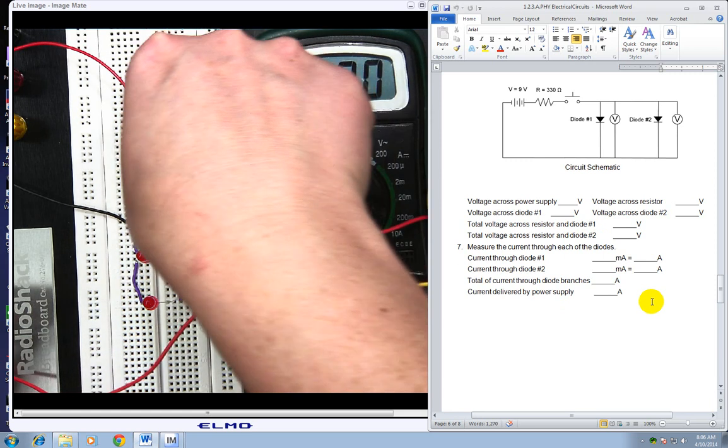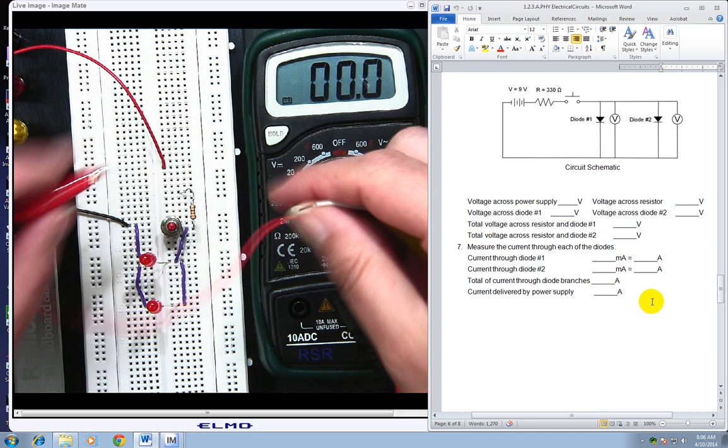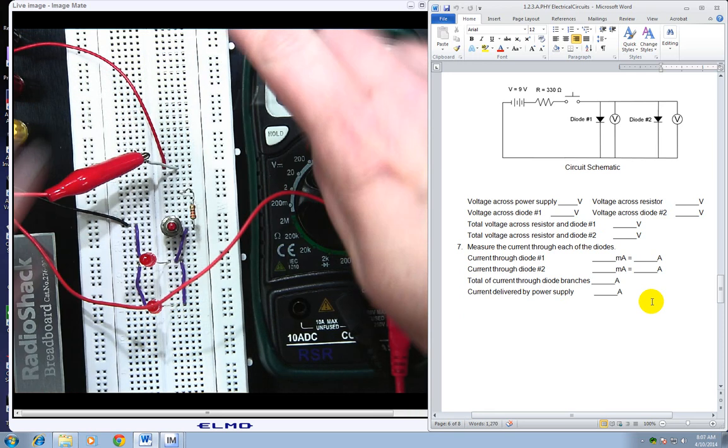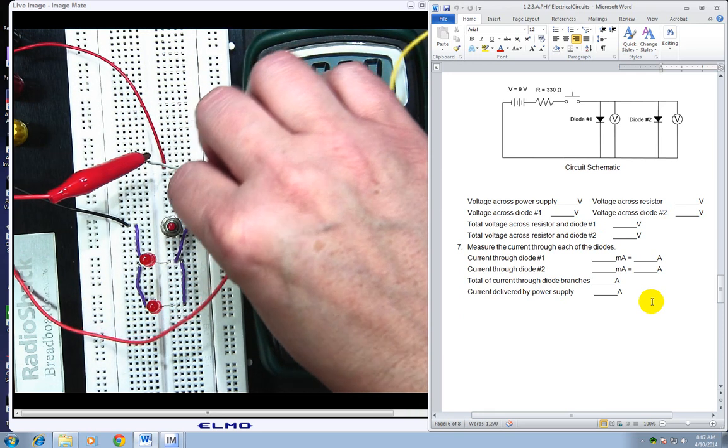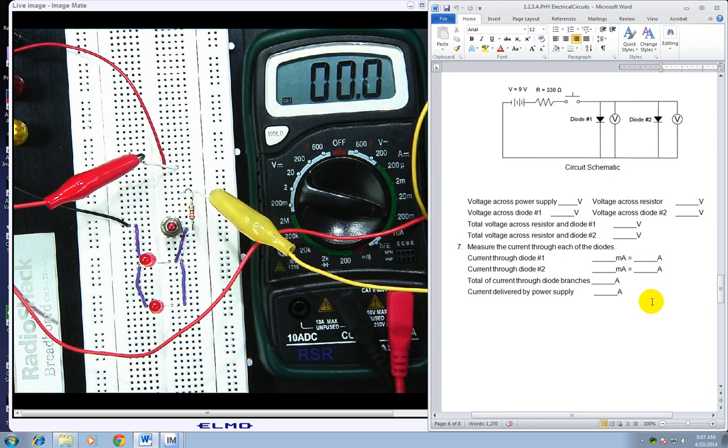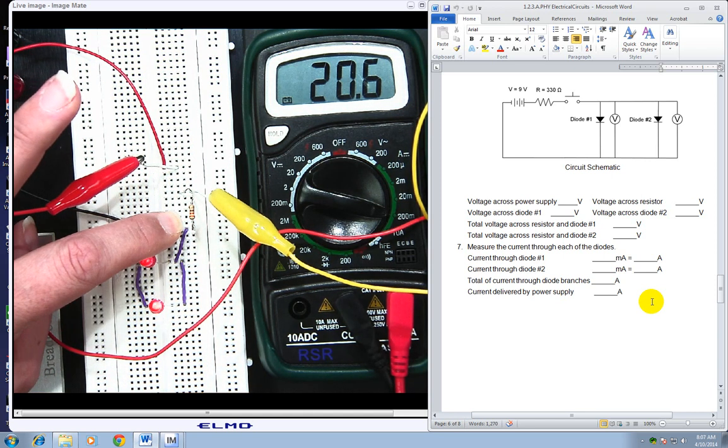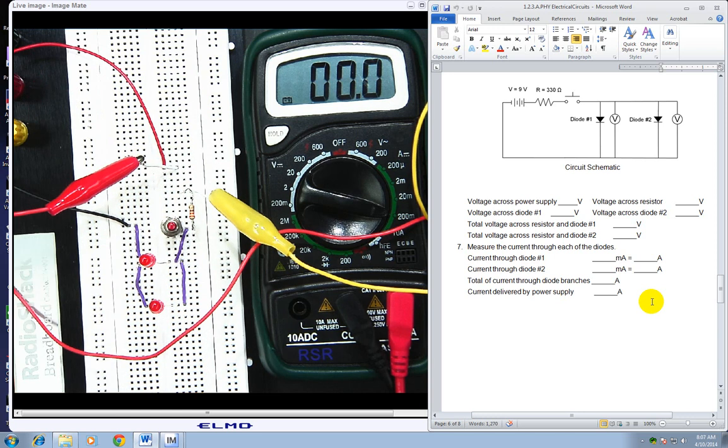So instead, we want to go from the power supply. So I'm going to take out that jumper. I'm going to go in with my red. All right, and now we're on the series here with the resistor, and that's very important. So I push the button, and notice it's 20.6.